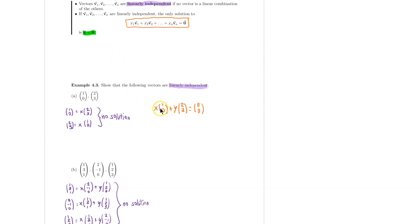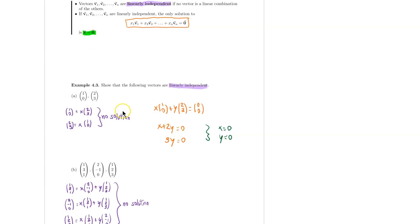I need to find the solution to this equation and see that the only solution is the zero vector. Writing this out, the first equation gives x plus 2y equal to 0, and the bottom equation gives 3y equal to 0. From the bottom equation, y equals 0, and plugging that into the top equation, x equals 0. So the only solution is when all variables are zero, which means these two vectors are linearly independent.